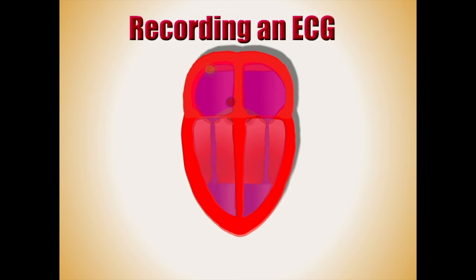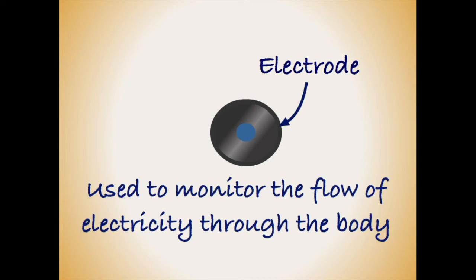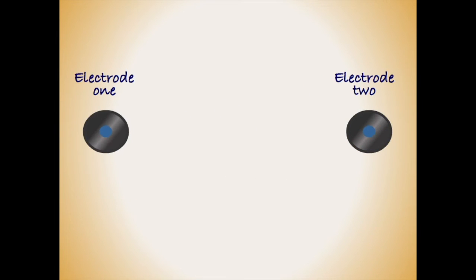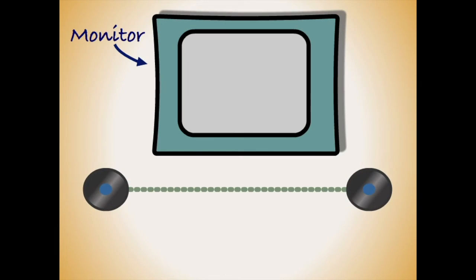While we may not be able to directly observe the heart beating within our chests, with the help of electrodes it is relatively simple to observe the electrical conduction that controls the cardiac muscle. In medicine, electrodes are used to detect the flow of electricity through the body. Two electrodes placed next to one another will produce a lead — an imaginary line between the two electrodes — along which we can observe the flow of electricity on a monitor.